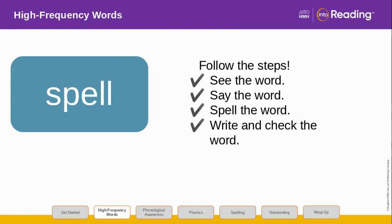Look at the letters in the word. Let's spell it aloud. S-P-E-L-L. In this word, the letter E stands for the short E sound EH. Blend with me. Spell. Spell. Now write the word spell. Try to write it without looking. Then check it.